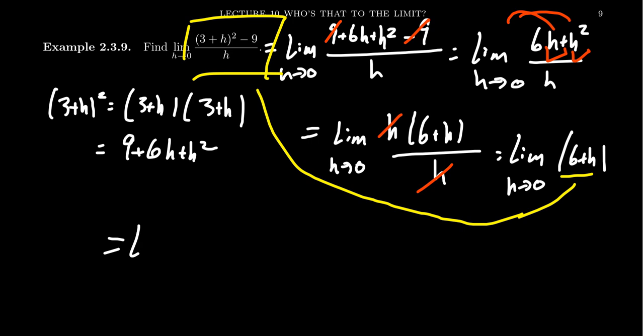If we take the limit as h goes to 0, we end up with 6 + 0, which just gives you 6. And since the two functions only differ by one point, the limit of (6+h) is the same as the limit of (3+h)² - 9 over h. Therefore, if we can simplify difference quotients algebraically, we can compute the limit by setting h equal to 0 in the simplification when the original function didn't have that option.